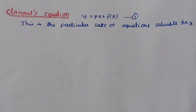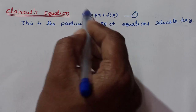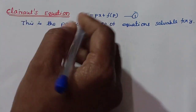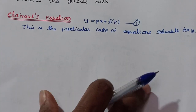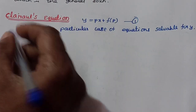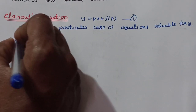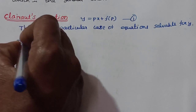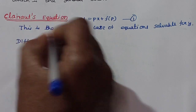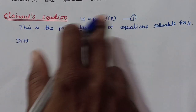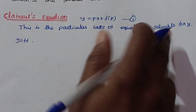This is a 2-mark question. We are talking about how to solve this, discussing this pattern for 5 marks. The first step is to write the equation in the pattern. Now, what do we do? We differentiate. This is the solvable-for-Y case.